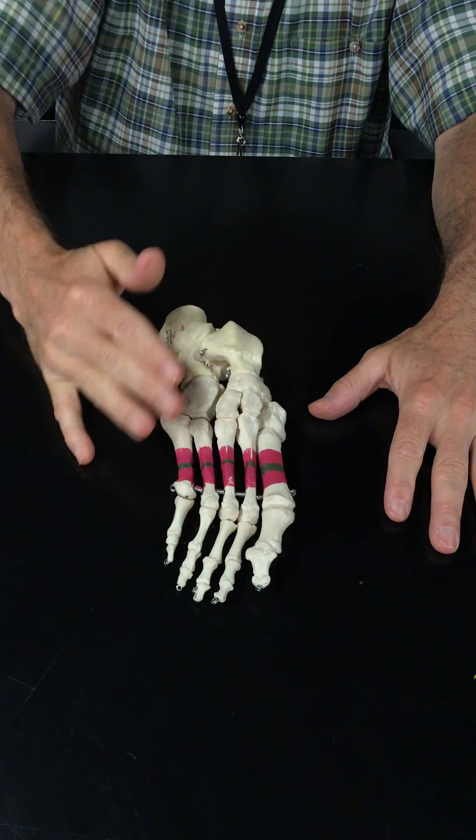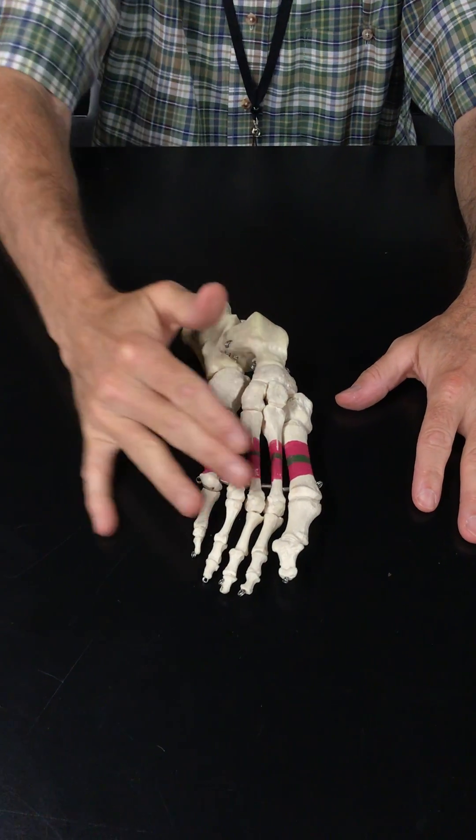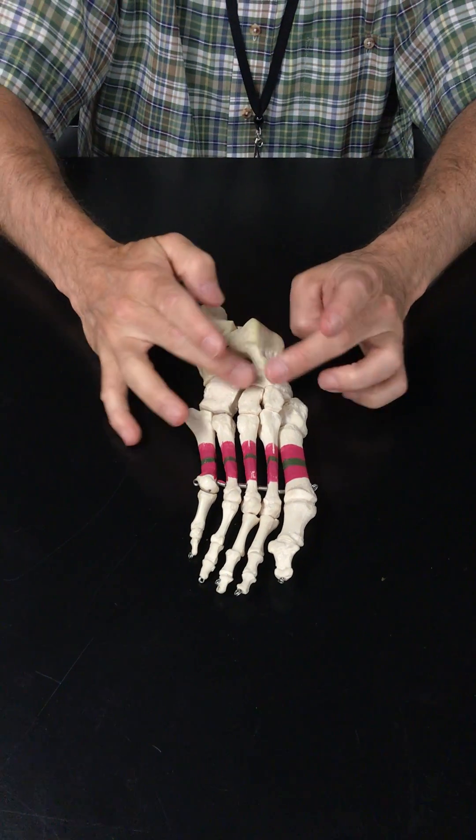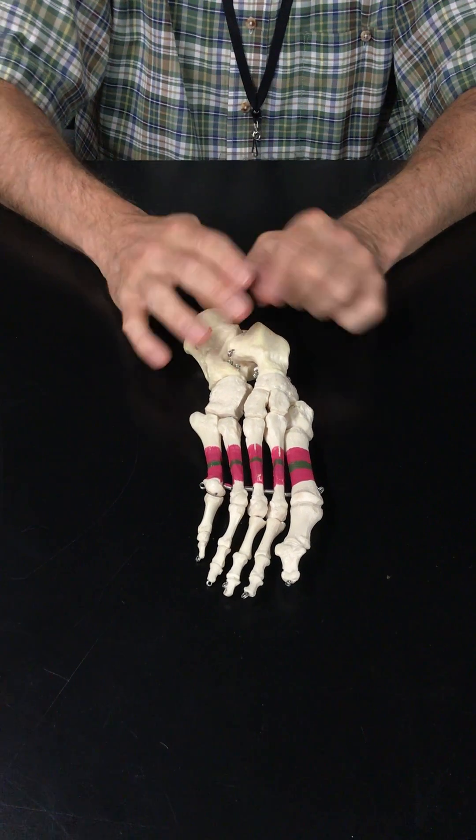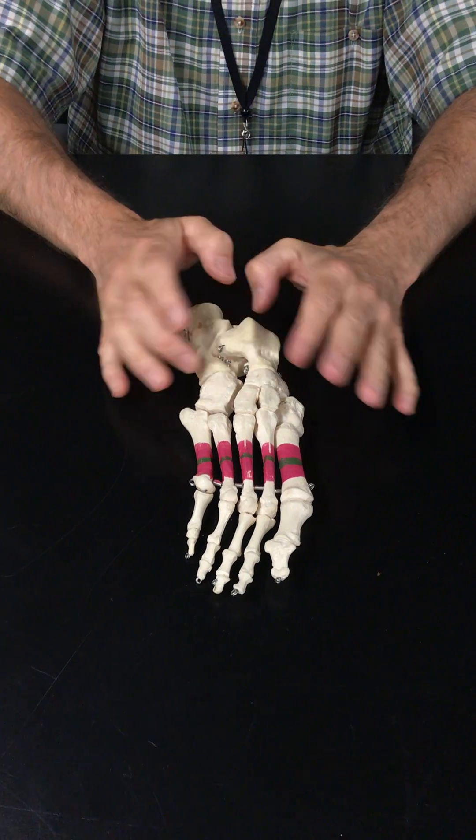Some metabones, these are called metatarsals. In the hand they were carpals, and then we have the tarsal bones. There's seven of them. In the hand we had carpal bones, there were eight of them.